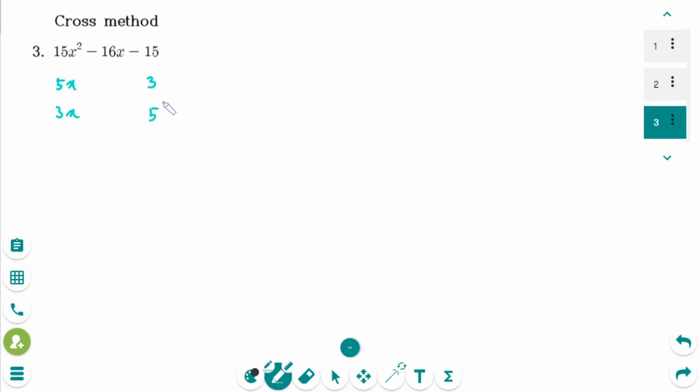But one of the numbers has a negative, because this is minus 15. I will show you later. When you cross multiply, this is 9x and then 25x. Combined together, we have to make minus 16x. That means 25 must be negative. So minus 5 is here.